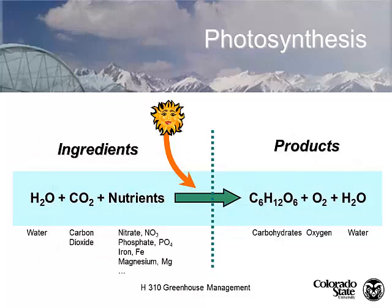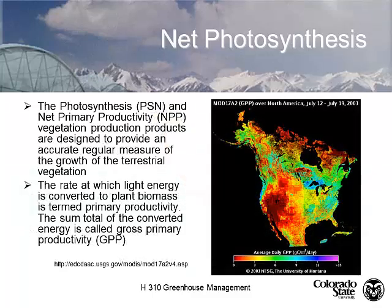C6H12O6 — you've all seen that before; we won't talk about that. Net photosynthesis on our planet is what drives our planet. The rate of light energy converted to biomass is shown on this chart — this is called gross primary productivity. You can see the closer to violet on the right-hand side is the higher photosynthetic rates, all the way down to the low photosynthetic rates in the arid southwest.